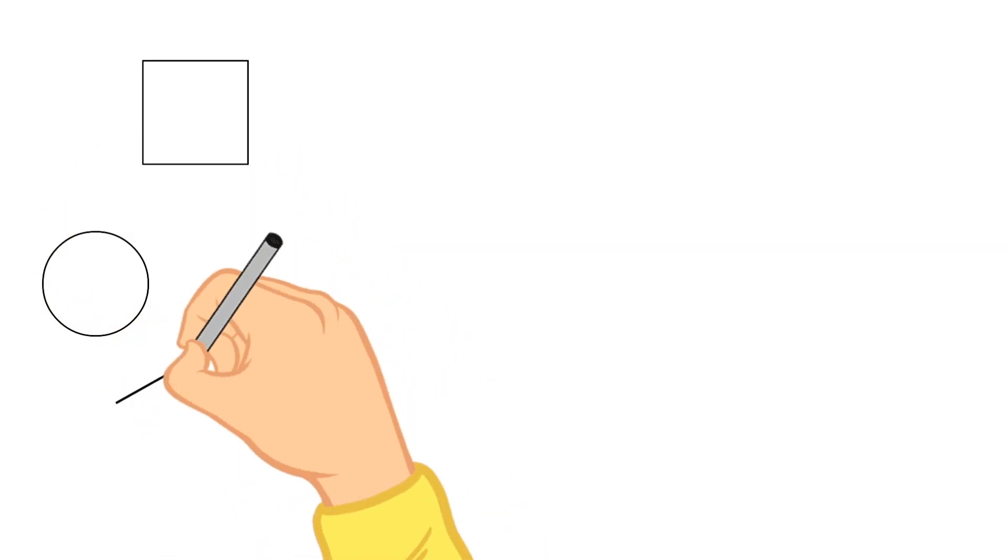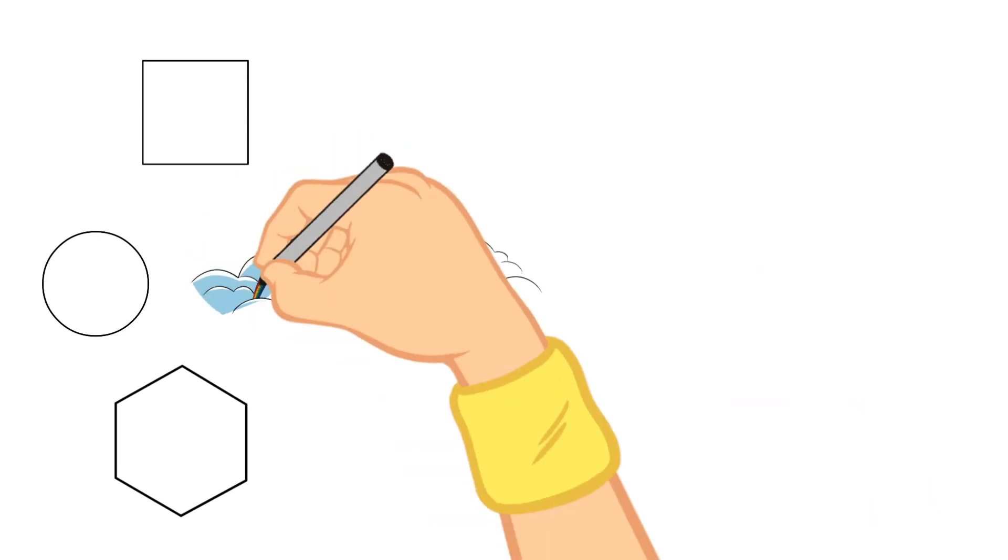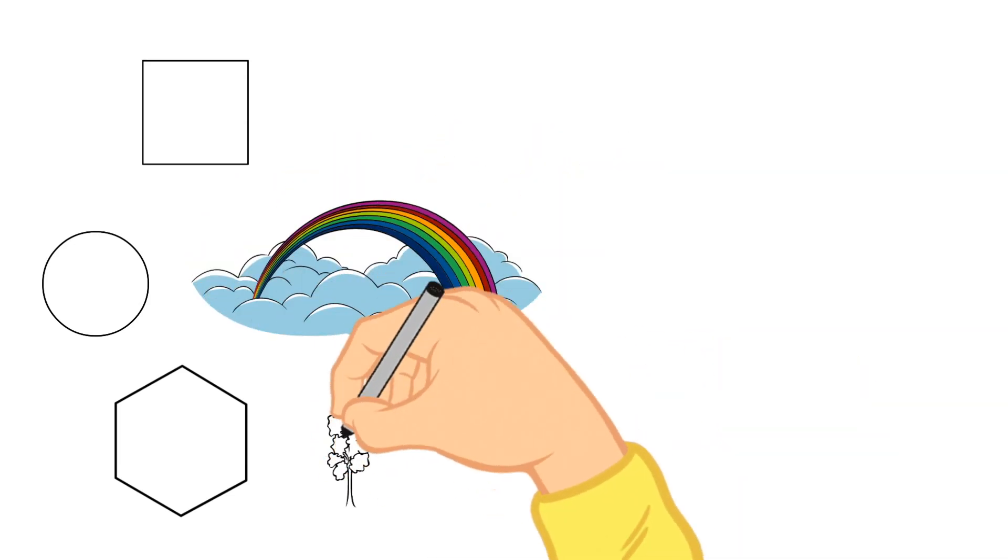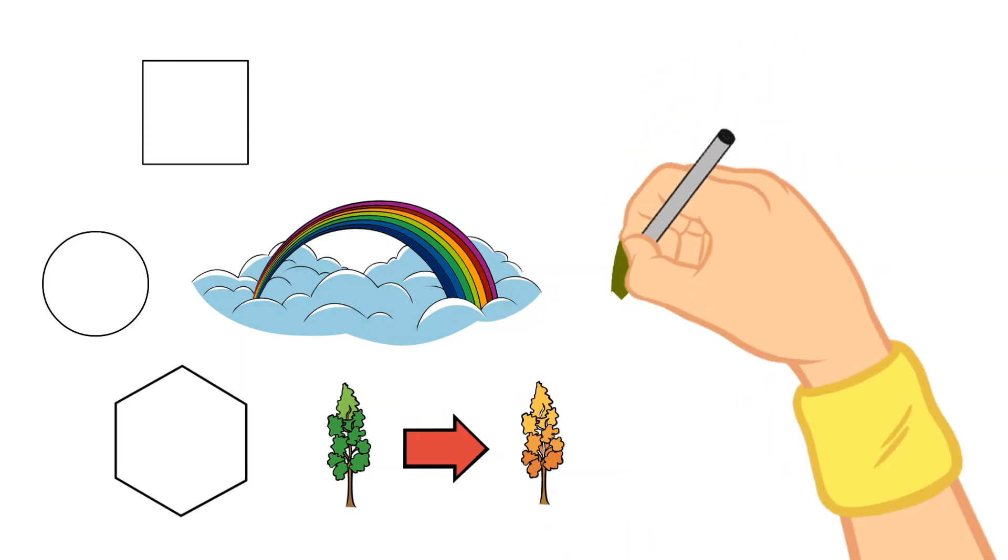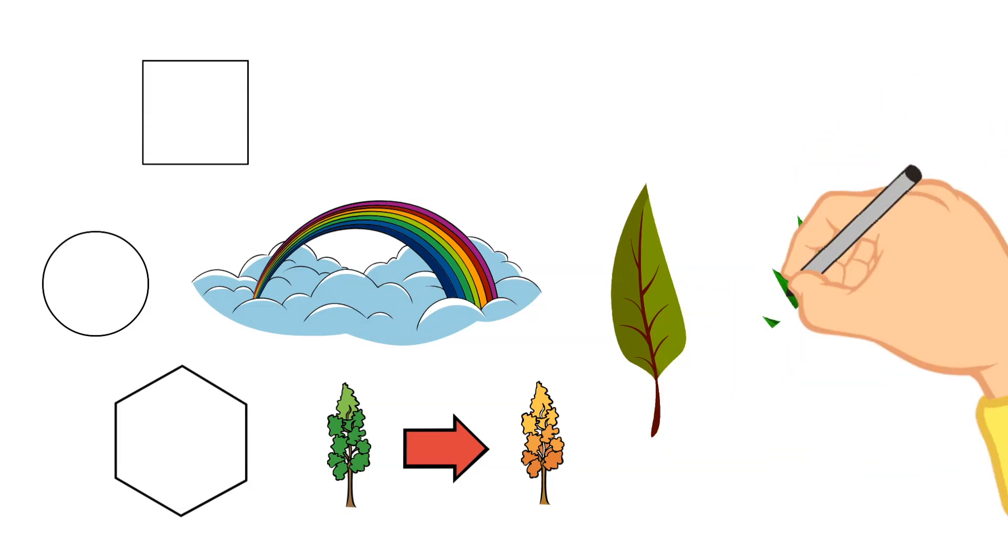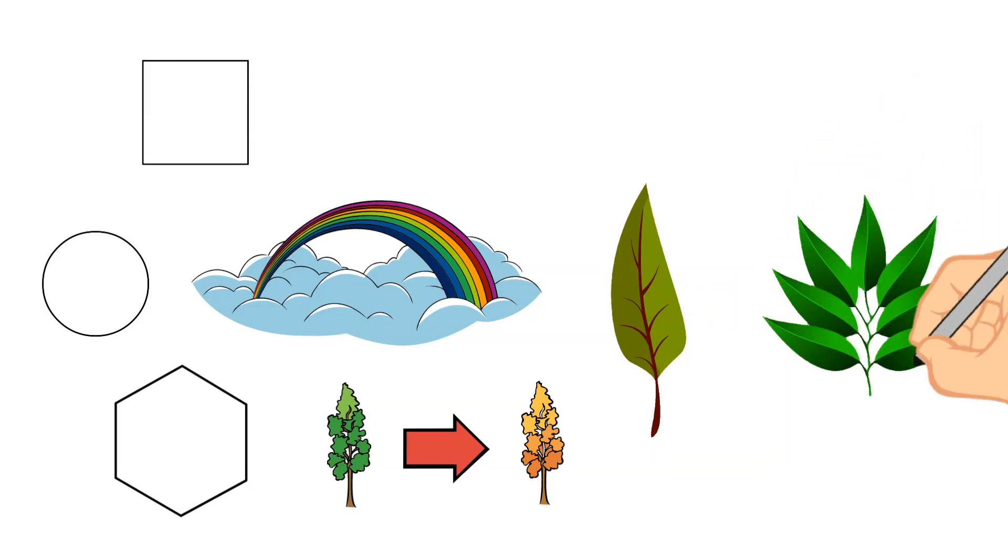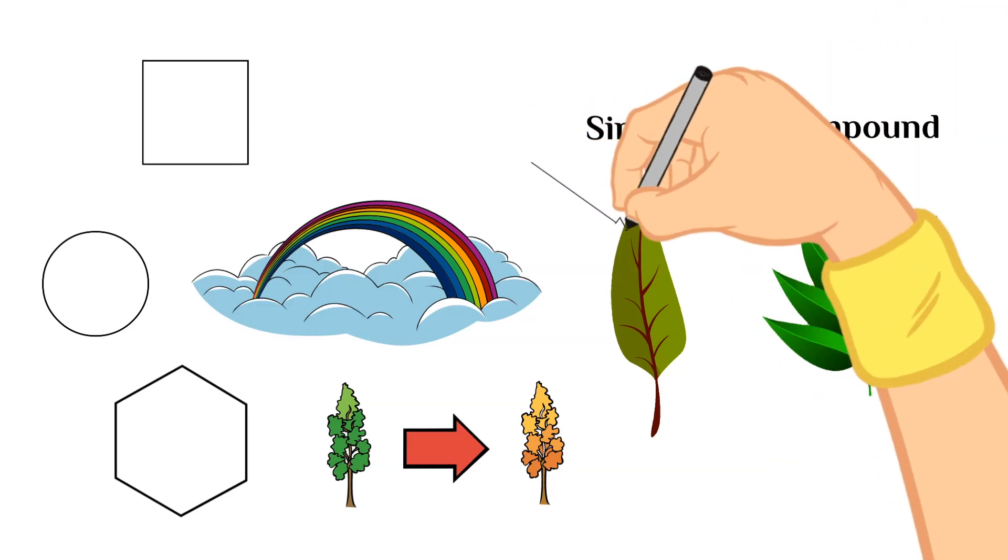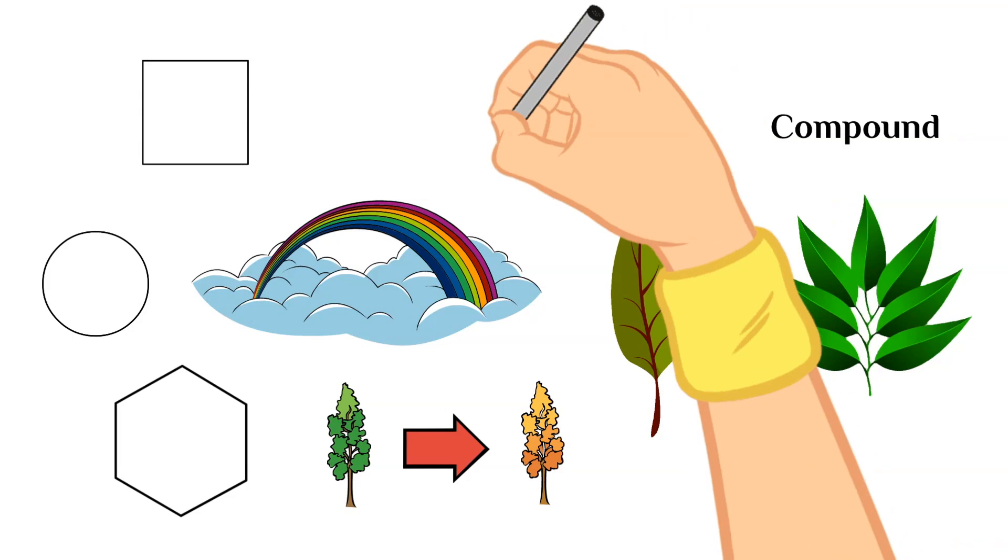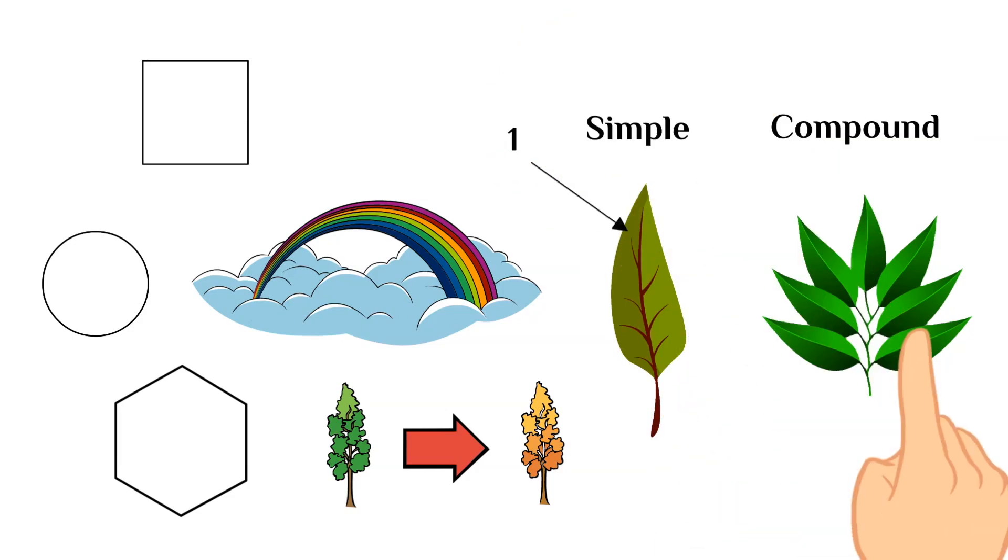Now leaves come in all kinds of different shapes, sizes, and colors. And some leaves even change color with the seasons. But overall, we can say that leaves are divided into two different categories when it comes to the physical structure of them. There are simple leaves and compound leaves. A simple leaf has just one leaf blade, whereas a compound leaf has more than one leaf blade.